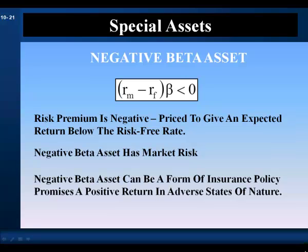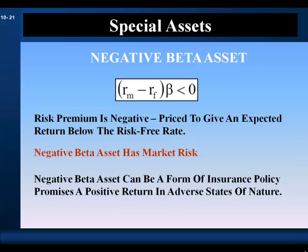Another special asset is a negative beta asset. The risk premium of a negative beta asset is negative — it's priced to give an expected return below the risk-free rate. But negative beta assets do have market risk. A negative beta asset with a beta of negative one can be thought of as having the same market risk as the market portfolio in a contrary way, because negative beta assets can be a form of insurance policy — they promise a positive return in adverse states of nature.